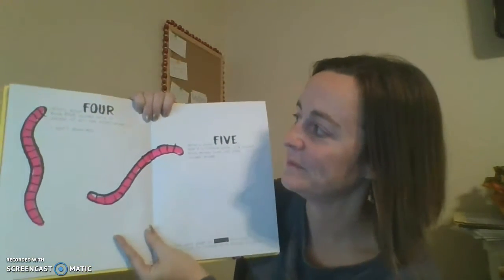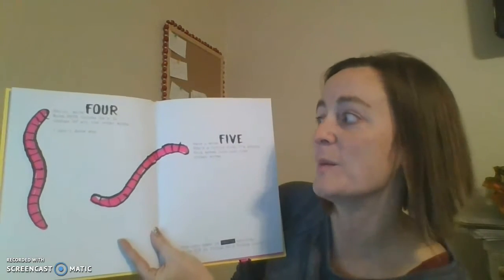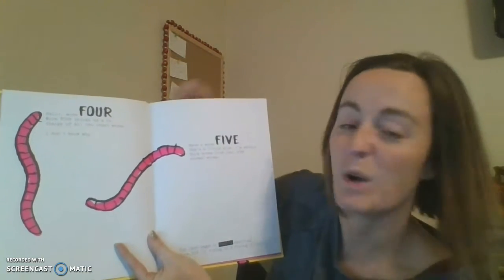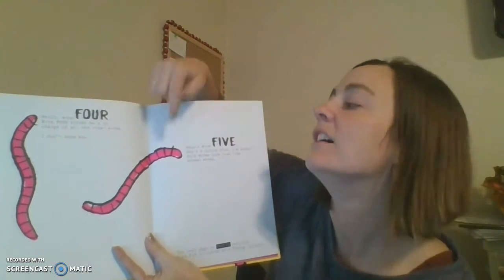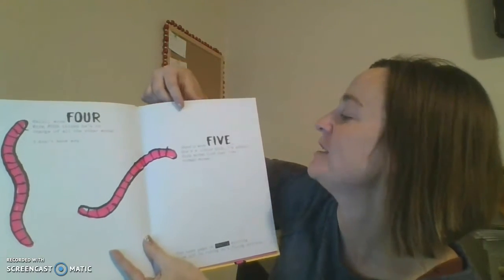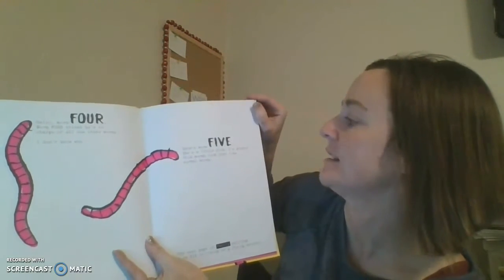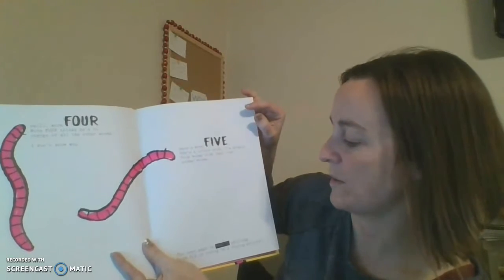Hello. Worm four. Worm four thinks he's in charge of all the other worms. I don't know why. What comes after? Five. Here's worm five. She's a little sick, I'm afraid. Sick worms just look like normal worms.